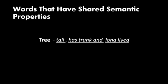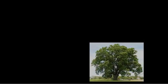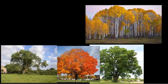Words that have shared semantic properties can be considered as a semantic domain. Consider the semantic properties of the word 'tree': it is a plant that is tall, has a trunk, and is long-lived compared to other plants. The domain of trees includes such words as oak, maple, ash, birch, pine, and palm.